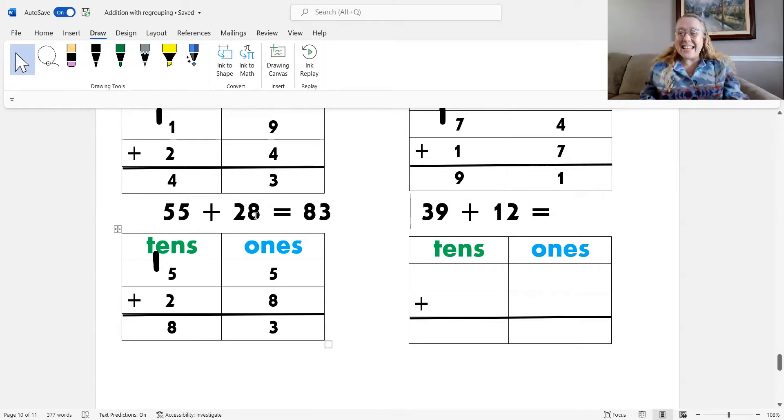Okay. Let's go ahead and continue. What do I do first? I place the addends into the place value chart. So, 39 has 3 tens and 9 ones. And 12 has 1 ten and 2 ones. Okay.